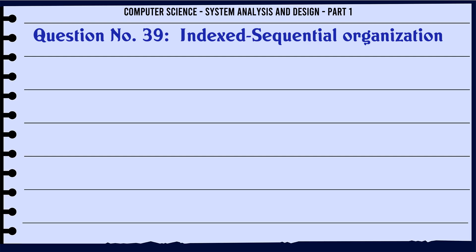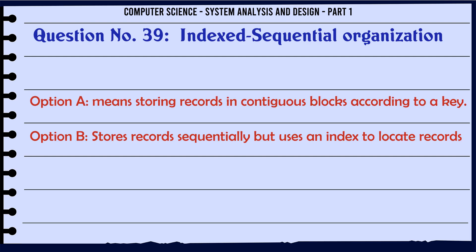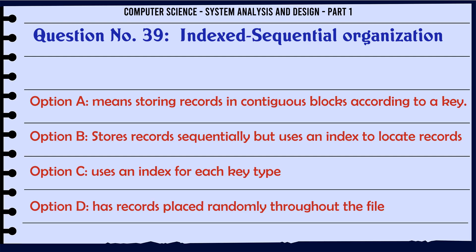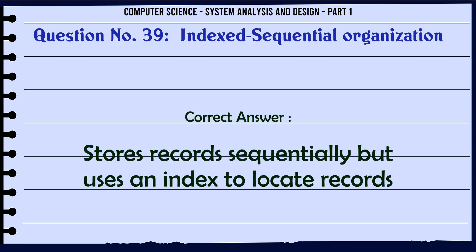Indexed sequential organization: A. Means storing records in contiguous blocks according to a key. B. Stores records sequentially but uses an index to locate records. C. Uses an index for each key type. D. Has records placed randomly throughout the file. The correct answer is: Stores records sequentially but uses an index to locate records.